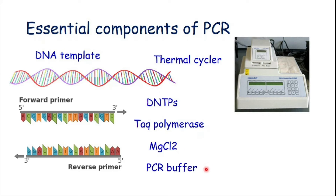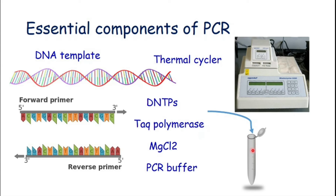The last thing we need is PCR buffer. All of these ingredients will be added to a PCR tube, and this PCR tube will be placed in the PCR machine to run the PCR reaction.